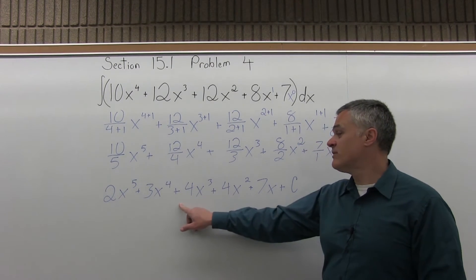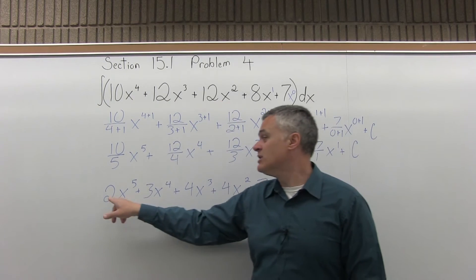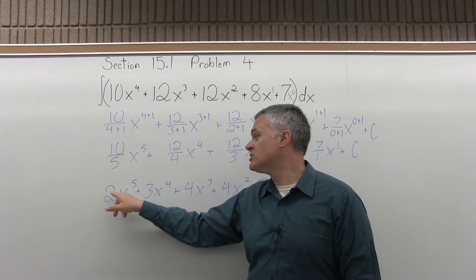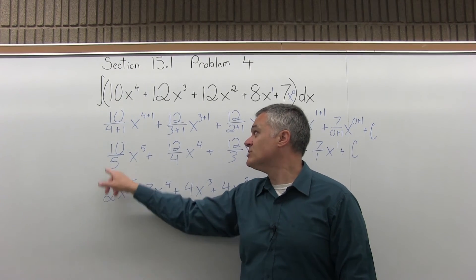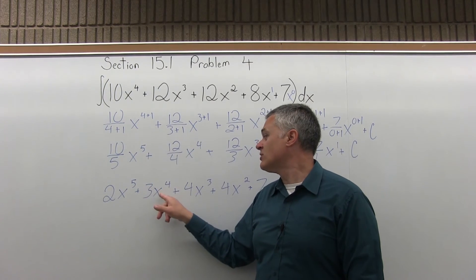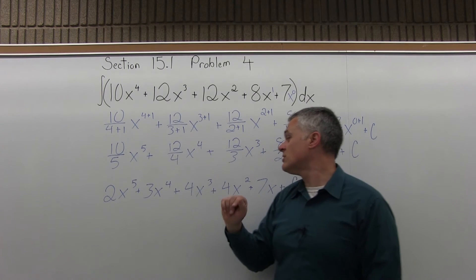And again, you can check it. Take the derivative of this answer that we came up with, and it will give you back the question. This 2x to the 5th, 5 times 2 is 10, x to the 4th. The 3x to the 4th here, 4 times 3 is 12, x to 1 less power is x to the 3rd.